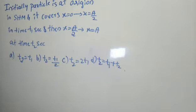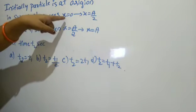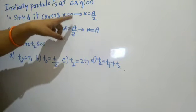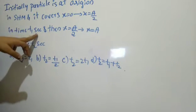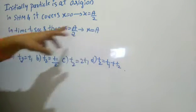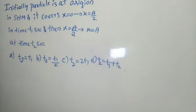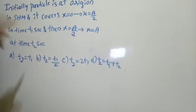Hello dear students. Today we will take some new problems from the 2001 IIT questions. Initially the particle is at the origin in simple harmonic motion and it covers x=0 to x=a/2 in time t1 seconds, and then x=a/2 to x=a in time t2 seconds. So we need to find out the relation between t1 and t2.